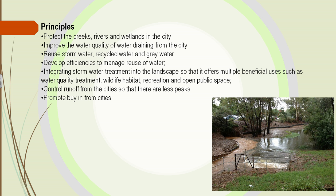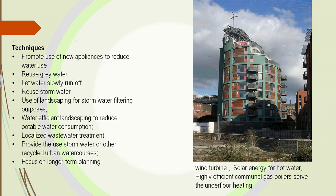We need public buy-in and to use water in a more efficient way. Here's a building that uses a wind turbine for energy and solar power to heat water. The water from sinks and toilets can be filtered and reused again. Stormwater can be reused with less treatment if we protect it initially. We have to focus on long-term planning to protect ourselves in the future.